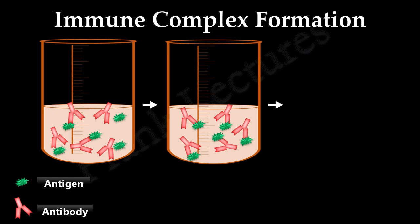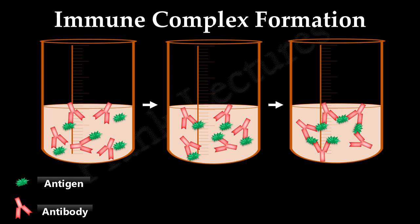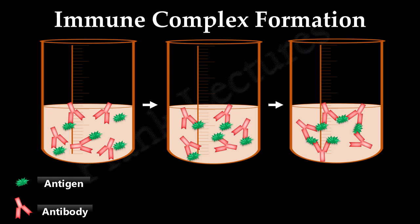Thus, antigens are multivalent. So now different antibody molecules will bind to the same antigen. And this will result in the cross-linking of antibodies. This repeated cross-linking results in the formation of an immune complex or lattice.